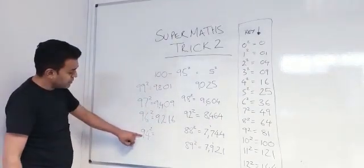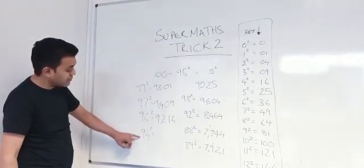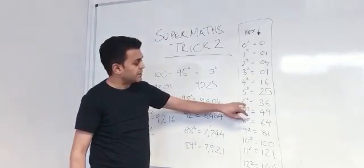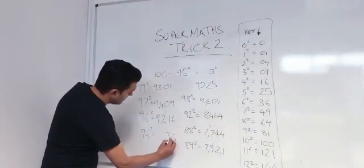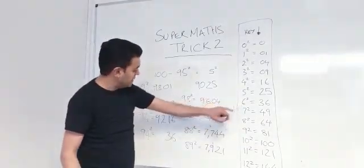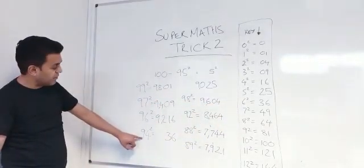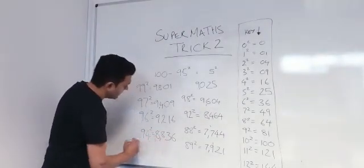94 squared. How close is 94 to 100? 94 plus what is 100? 6. What's the figure there? 6 times 6 is 36, so you've got 36. Take away 6 from 94, what have you got? You've got 88.